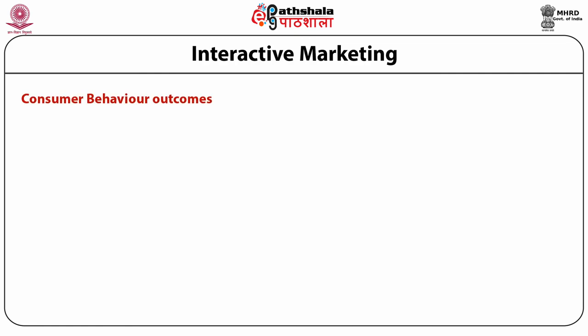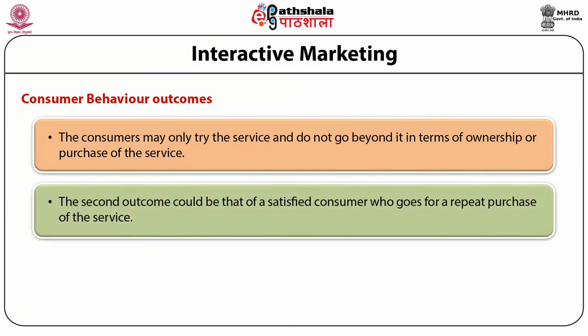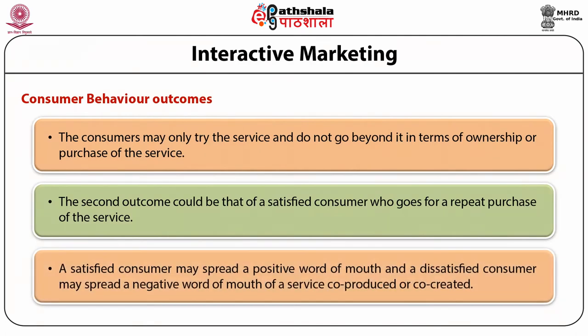Let's move ahead with the consumer behavior outcomes. This is the next step in the buying process of interactive marketing. The consumers may only try the service and may not go beyond it in terms of ownership or purchase. The second outcome could be that of a satisfied consumer who goes for a repeat purchase. A satisfied consumer may spread positive word of mouth, and a dissatisfied consumer may spread negative word of mouth for a service co-produced or co-created. Often, a satisfied consumer may also be involved in community interaction, which is a positive promotion for the service firm.